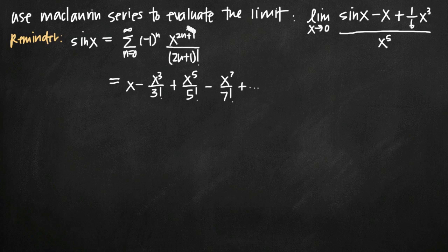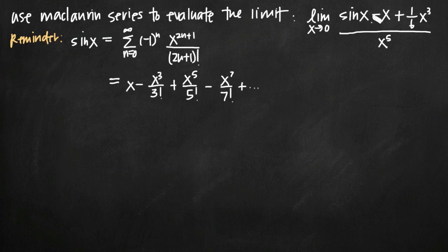What we want to do is plug in the first several terms of the series for sine of x. This is helpful because the rest of the terms in the limit are all just power functions — essentially a polynomial. We've got x to the first, one-sixth x cubed, and x to the fifth. Sine of x is not a polynomial, but if we plug in the first several terms of its series, now we've just got a rational function made up of power functions.